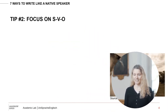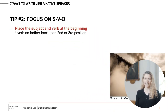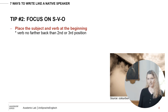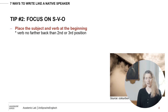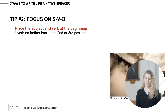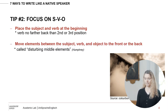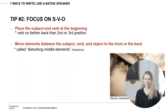Tip number two: focus on the subject-verb-object. You can imagine the subject and verb in a sentence like the engines that pull a train. As long as you have the subject and verb at the beginning — the verb shouldn't be any further back than the third position, and it's usually in the second — you can pull along a pretty complex sentence in English. It's not that sentences have to be simple; you just need the subject and verb at the front. In many languages, you get elements between the subject and verb, or between the verb and the object.